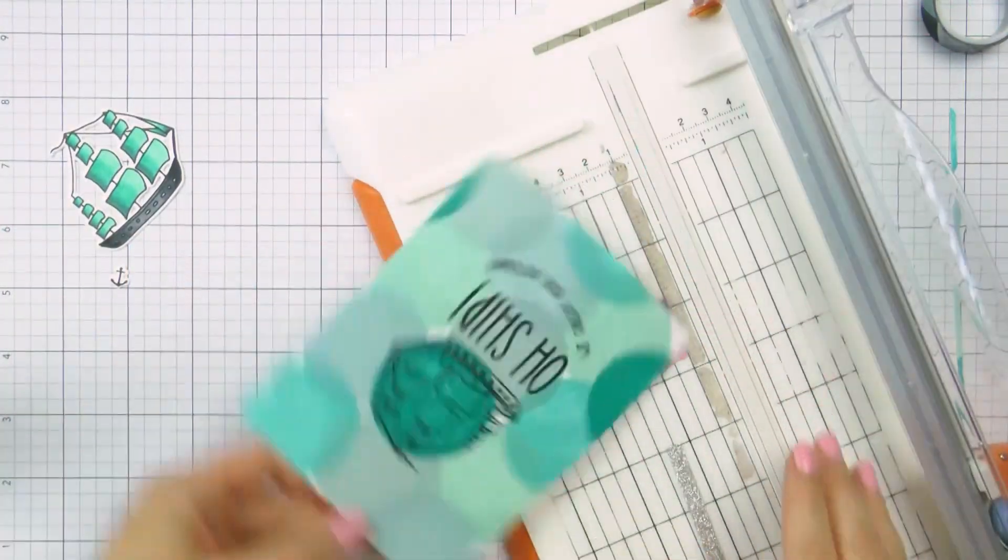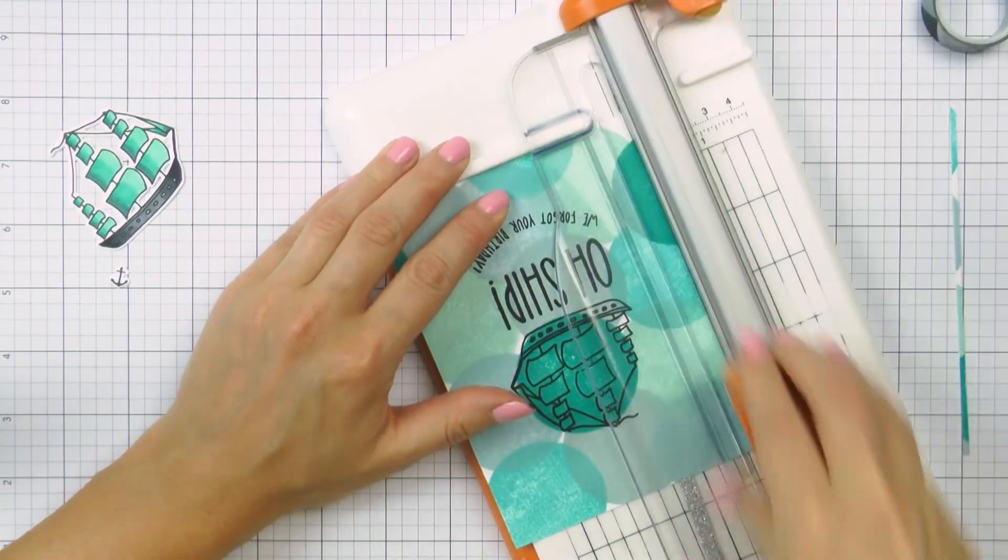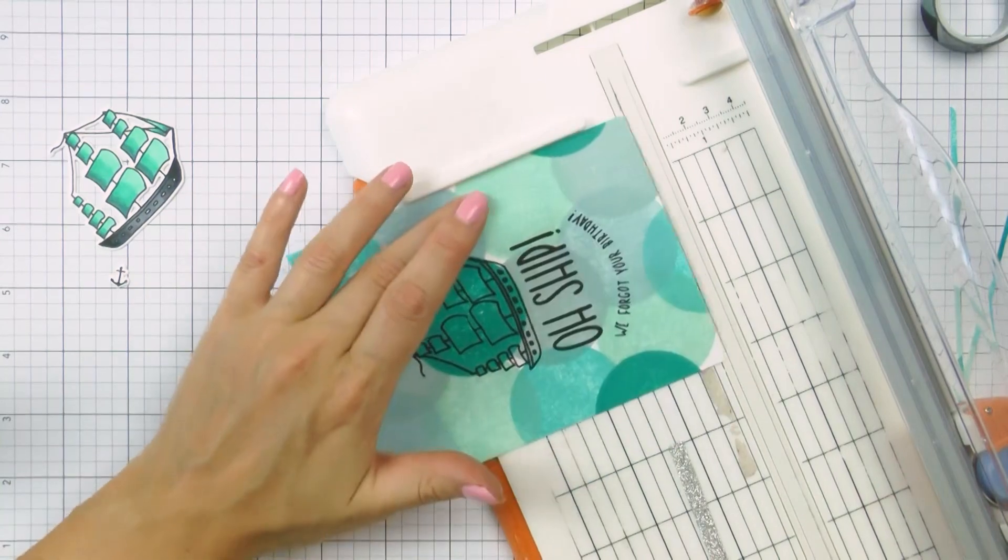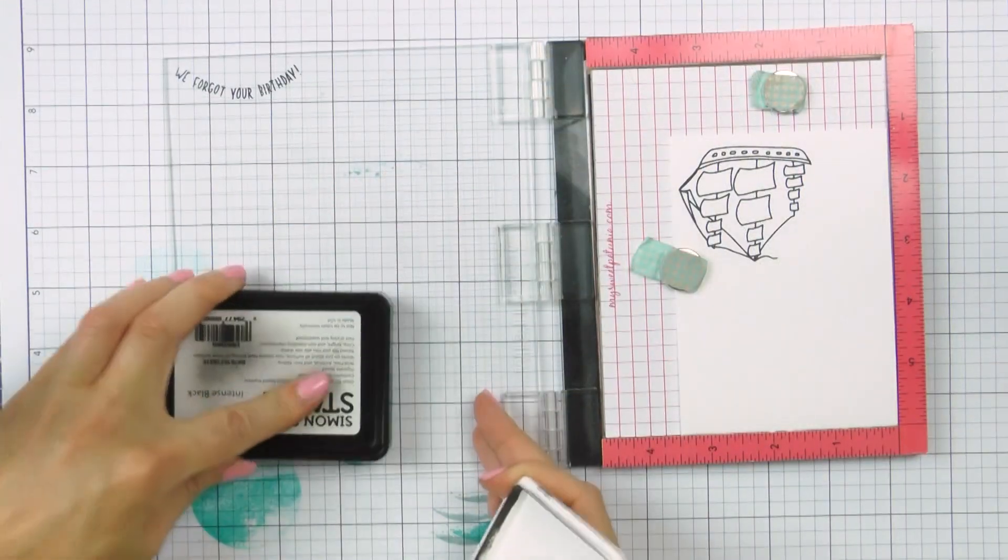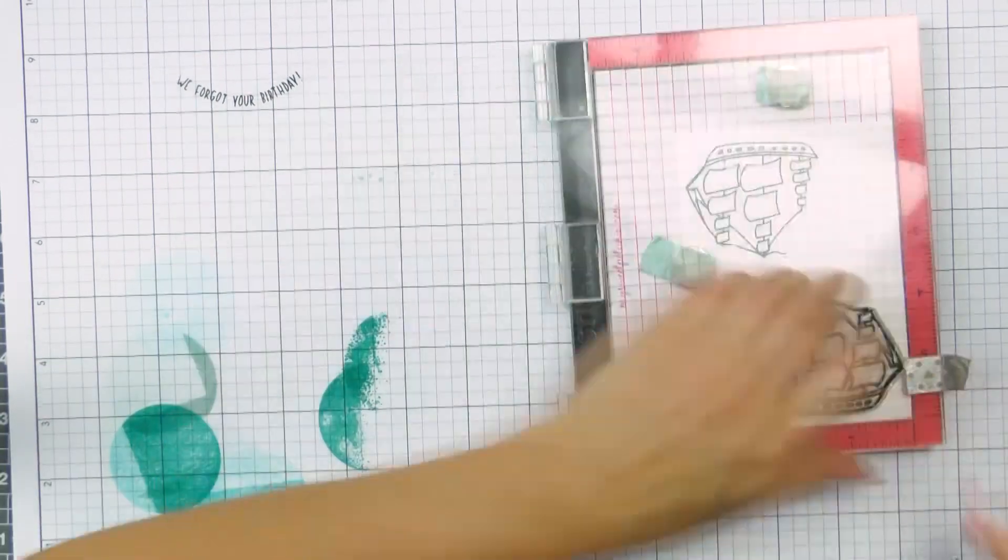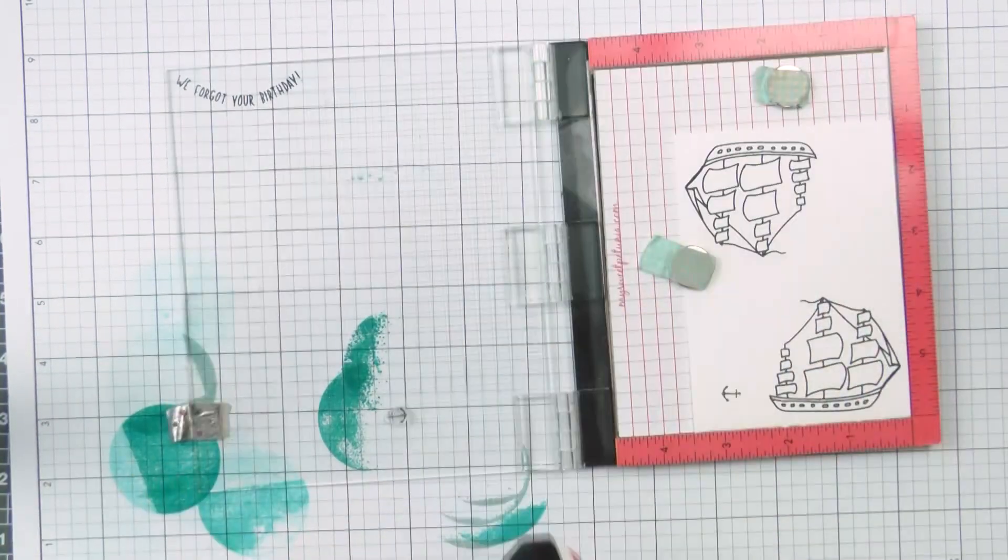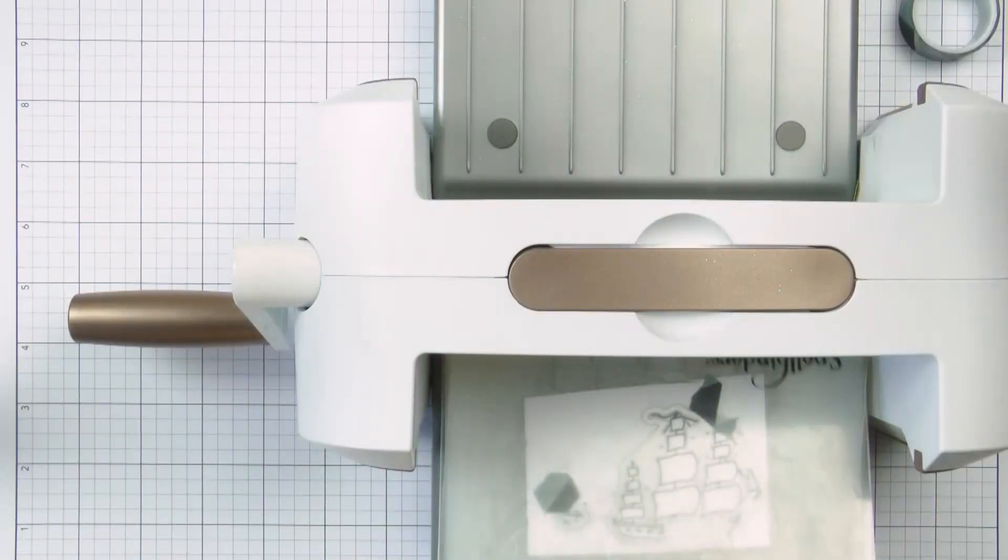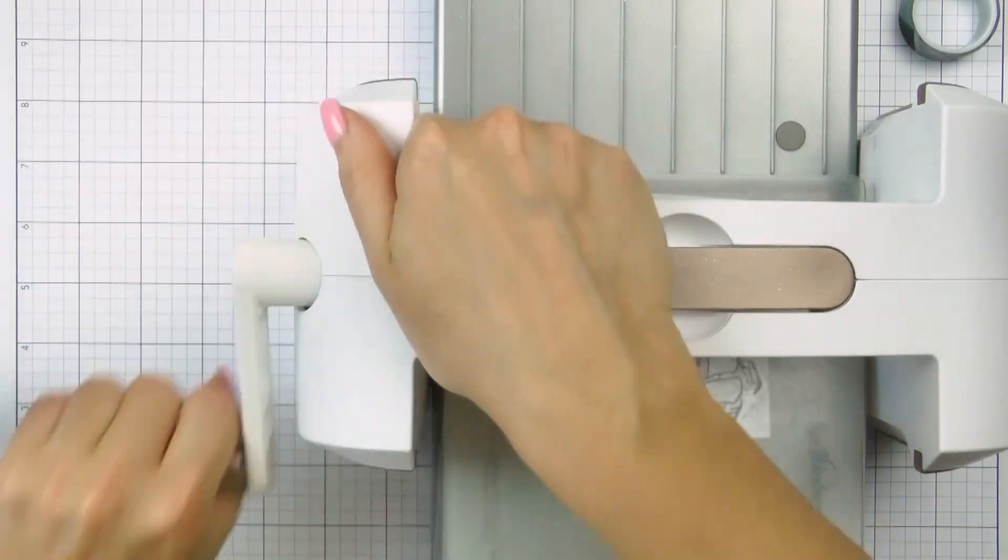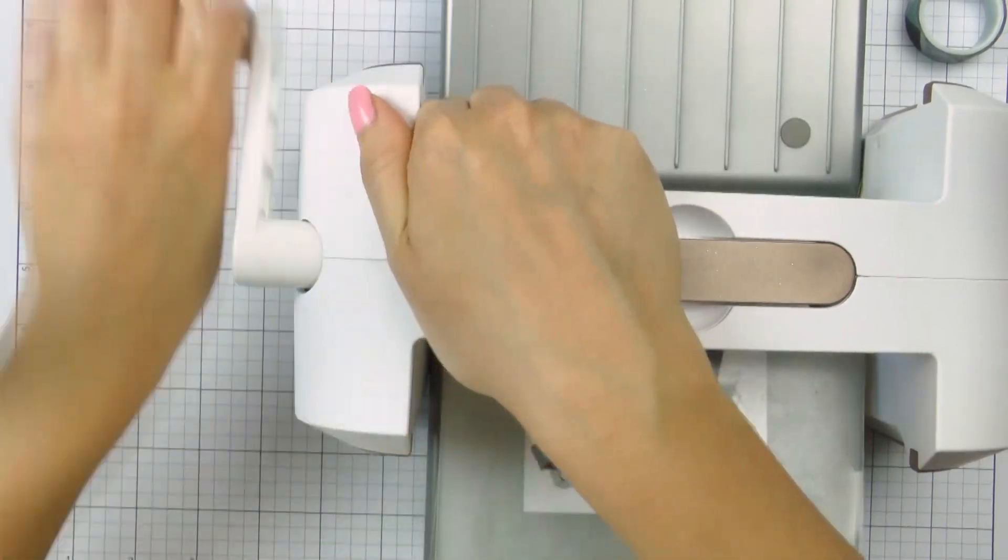To complete my second and third projects, I trimmed my panels down to four by five and a quarter inches and adhered them onto A2 top folding card bases. I also stamped two more ship images and an anchor onto a separate piece of cardstock. I used my Simon's Intense Black ink this time as I knew I'd be coloring these images later. Using coordinating dies, I cut out one of the ships and also the anchor and I set those aside to use for the third card.